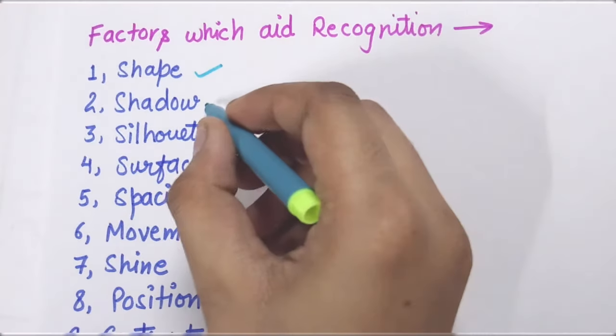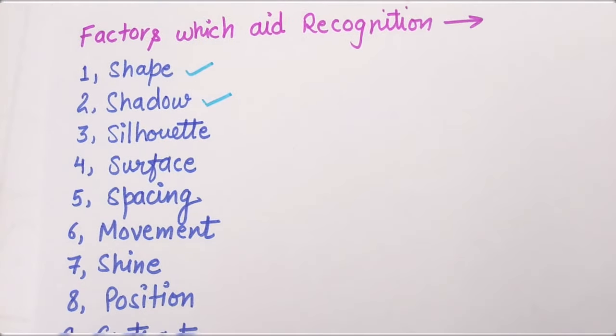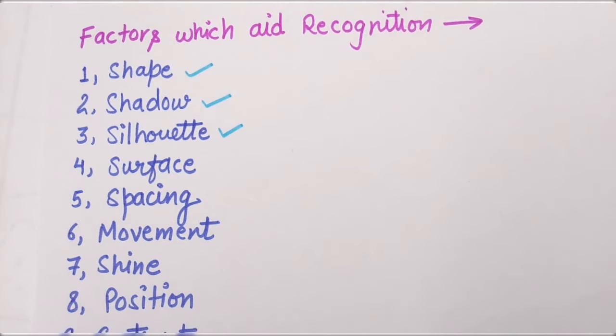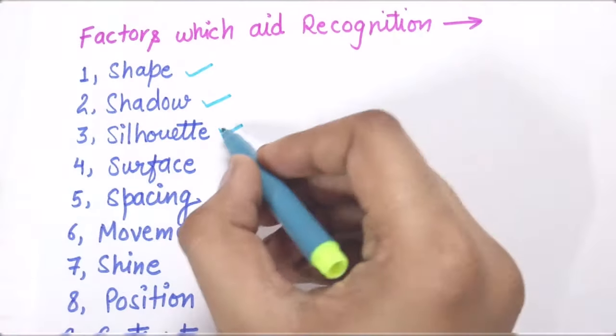If you are looking at the shadow of that particular image, then we will know about it. It's called Silhouette. Basically, you are looking at any kind of thing and you are looking at the silhouette.